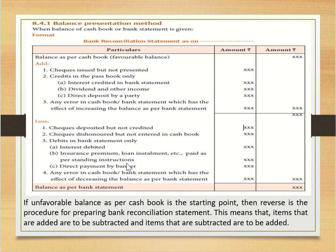If we have a standing instruction and the bank makes a payment, it will be a minus in the bank balance. Direct payment by bank to others: the bankers make this payment directly, so we don't have the entry in the cash book. As per the bank book balance, we have to deduct that amount. Any error in cash book or bank book which has the effect of decreasing the balance in the bank statement should also be subtracted.